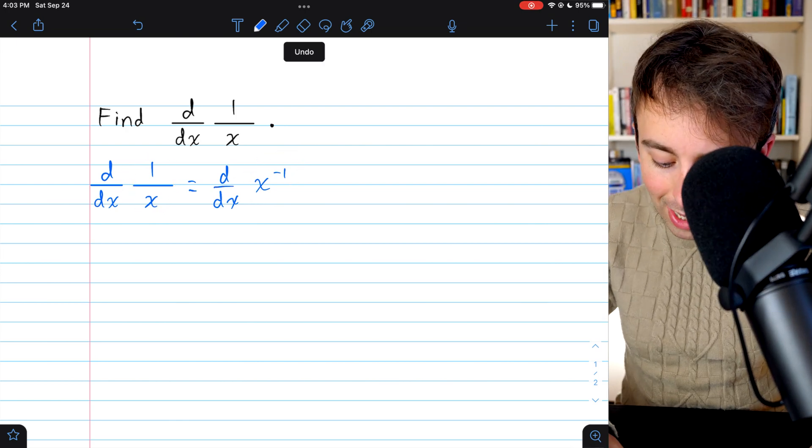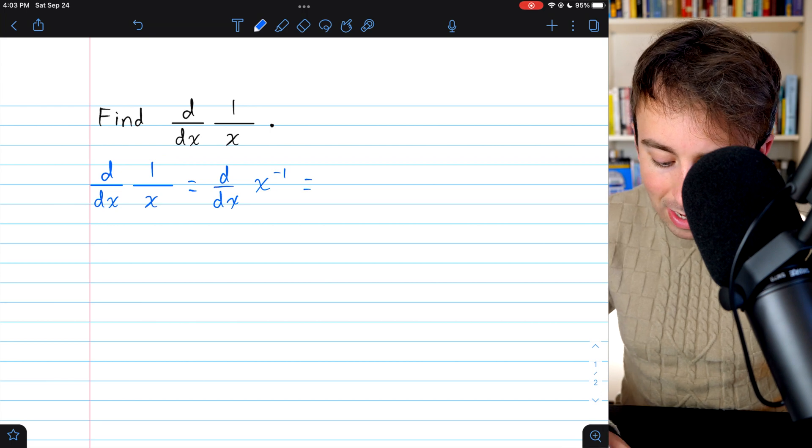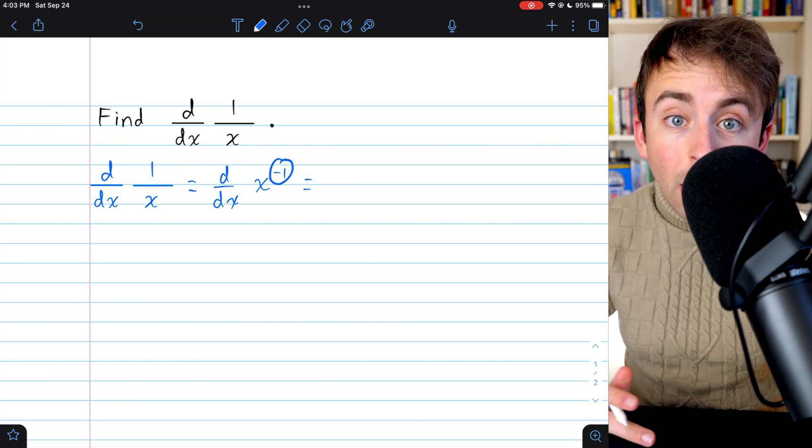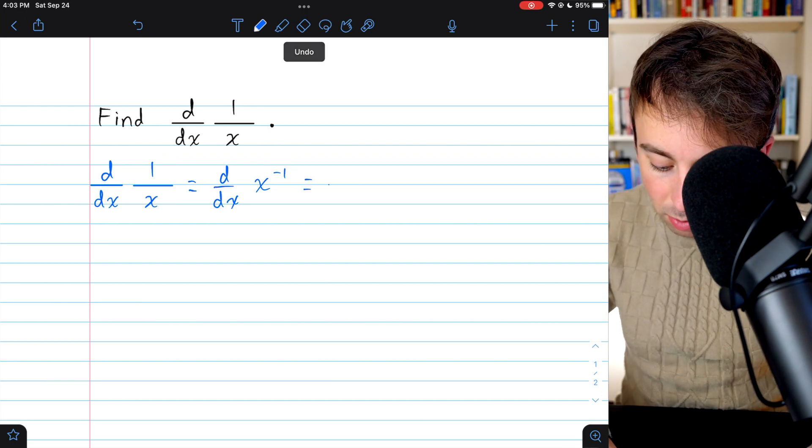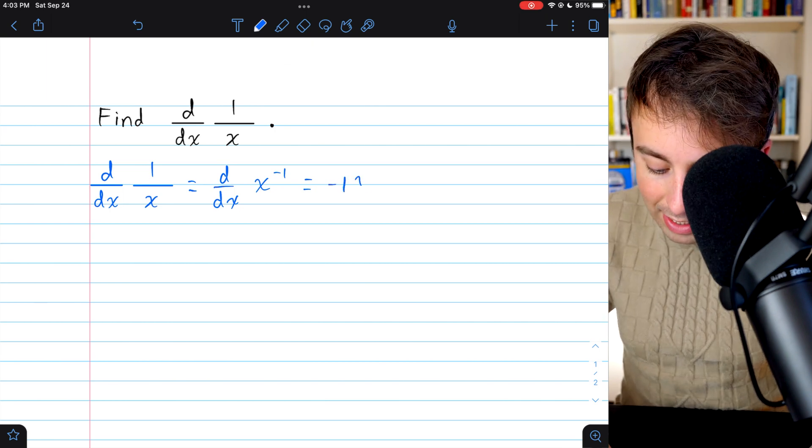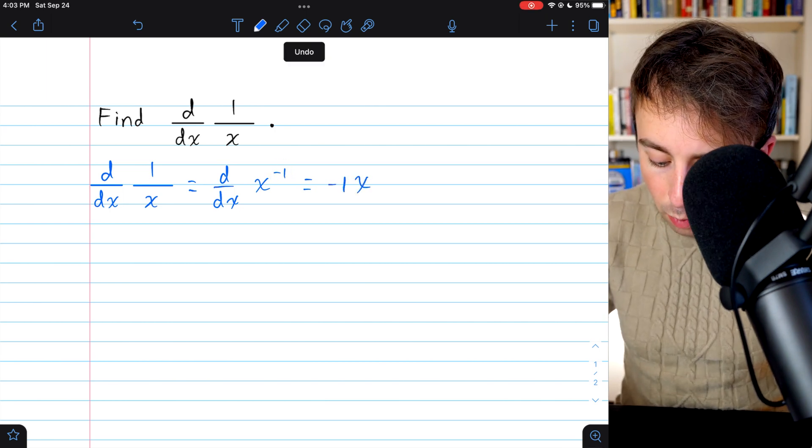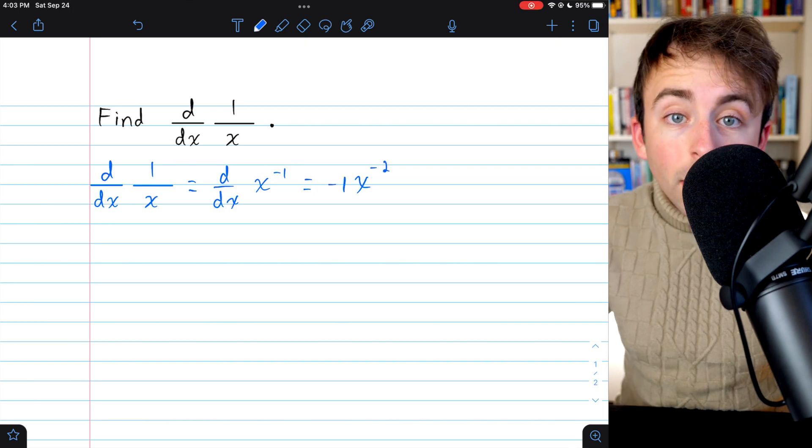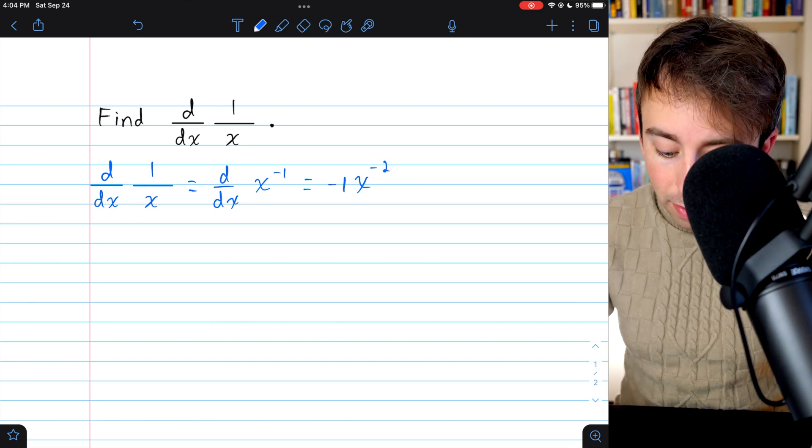Now we can just apply the power rule. That means we need to bring the power down in front as a factor, so negative 1 in front, and then we need to reduce the power by 1. So we have negative 1 times x to the power of negative 2.